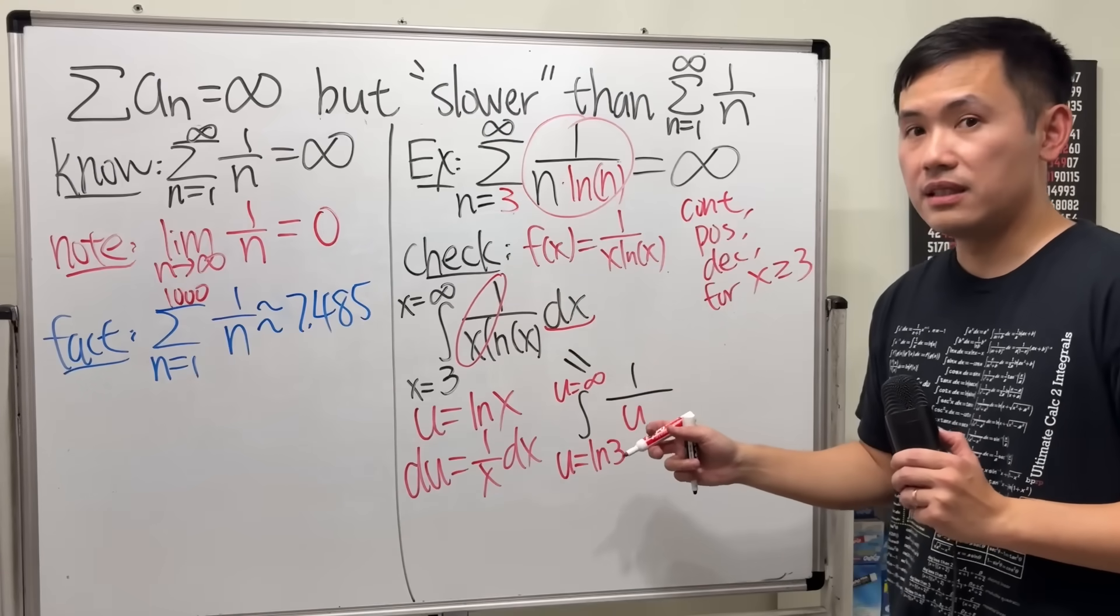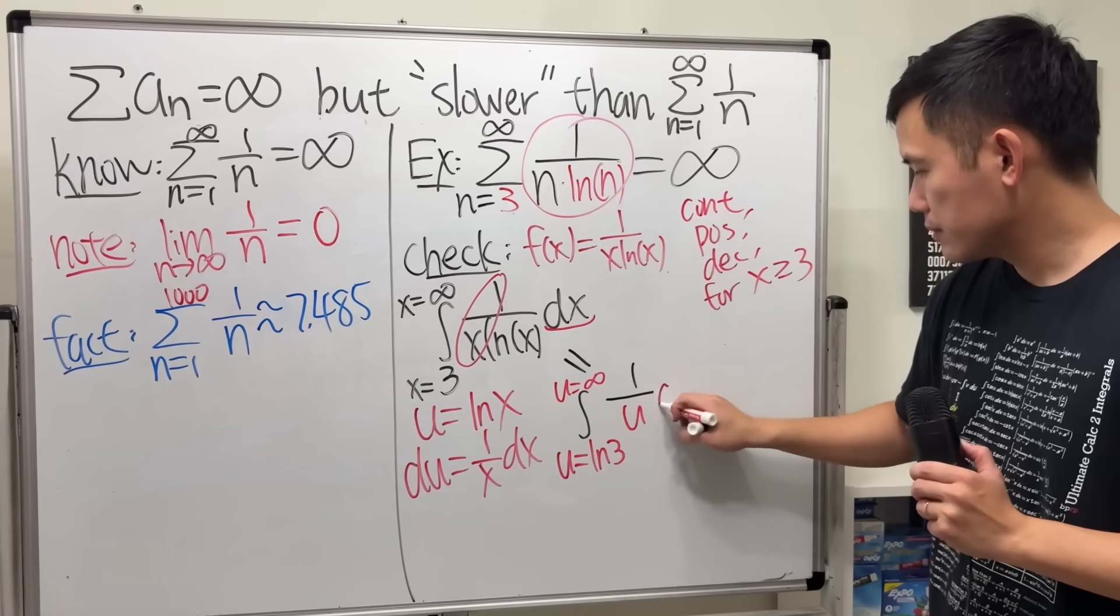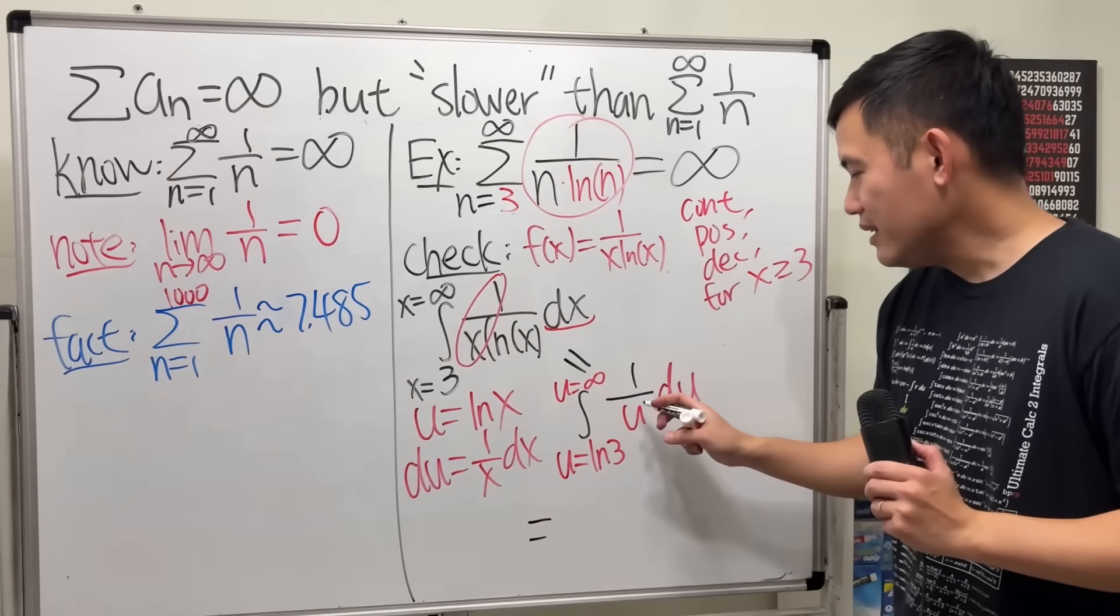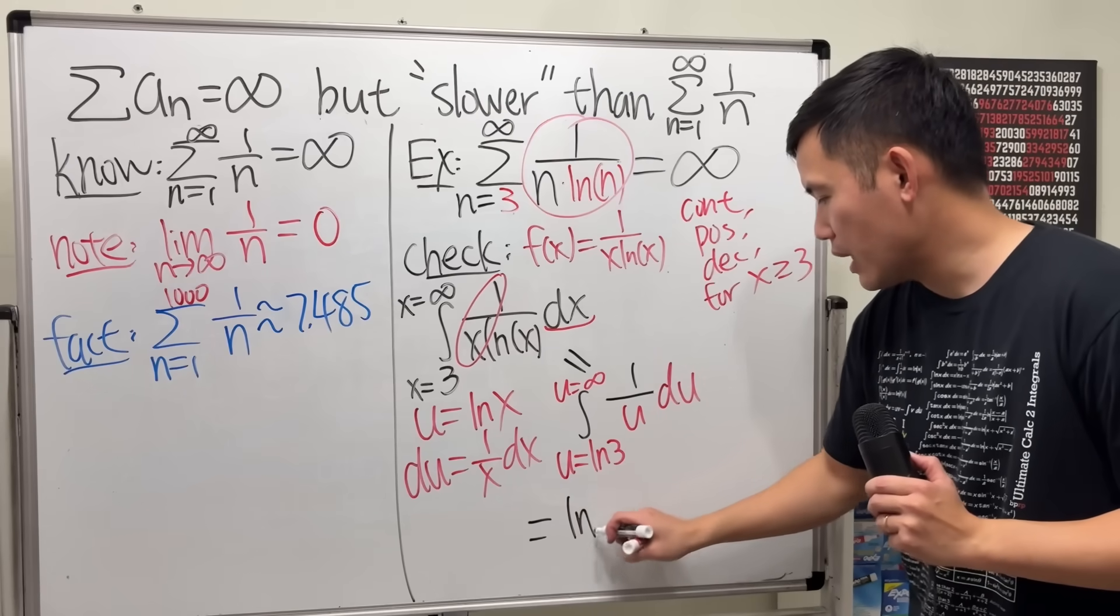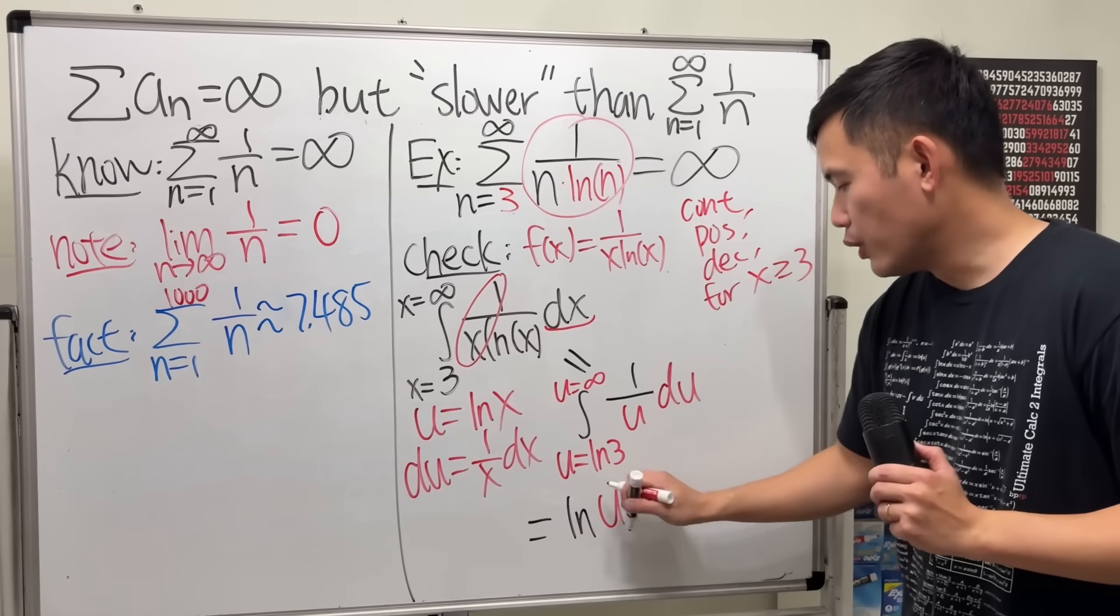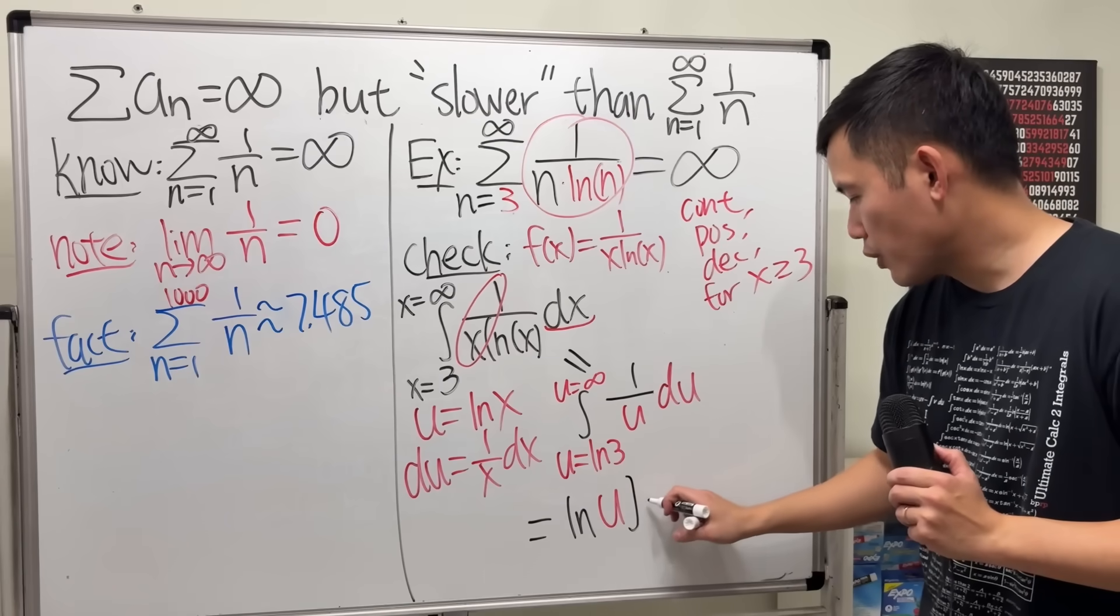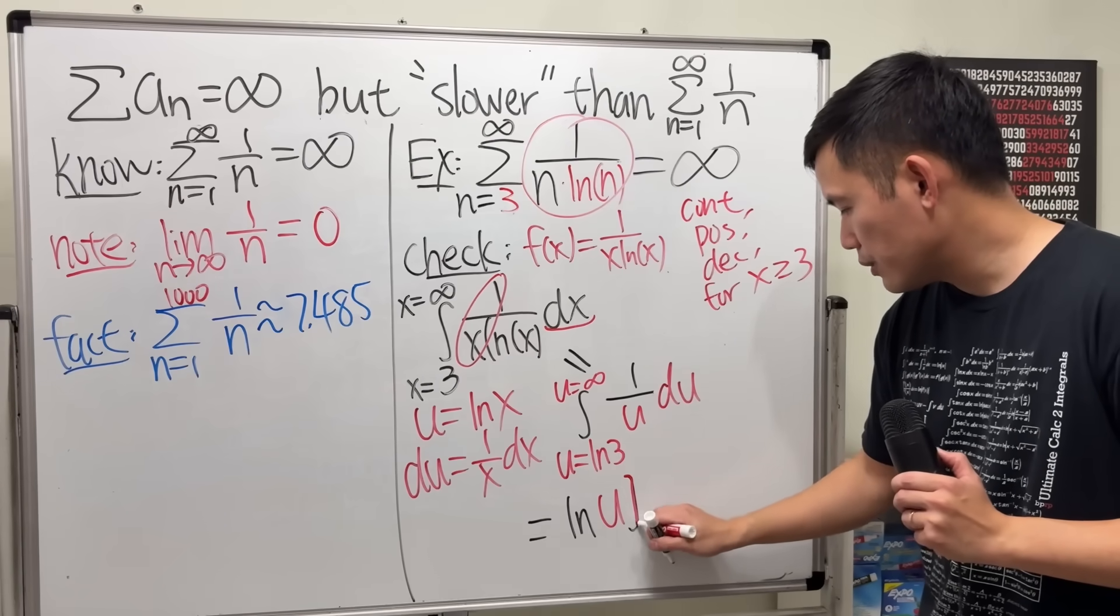Now, have a look. When we integrate 1 over u, we just get ln u. No need for absolute value because this and that are positive. And we go from ln 3 to infinity.